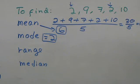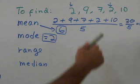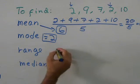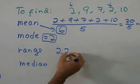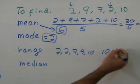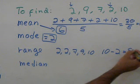The range. The range is the biggest number, that is 10, minus the smallest. The smallest is 2. If you order the numbers, 2, 2, 7, 9, 10, then you subtract the biggest minus the smallest. That's equal 8.